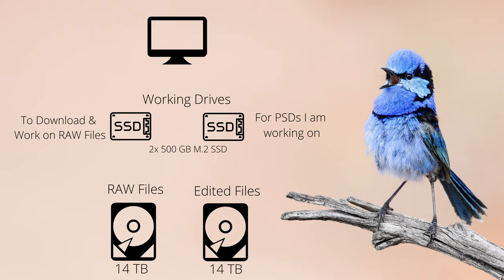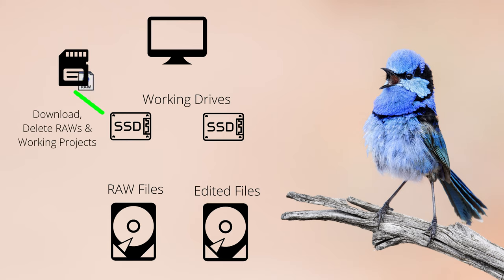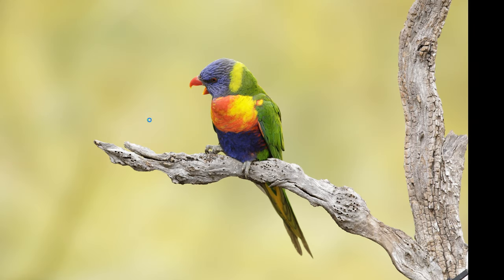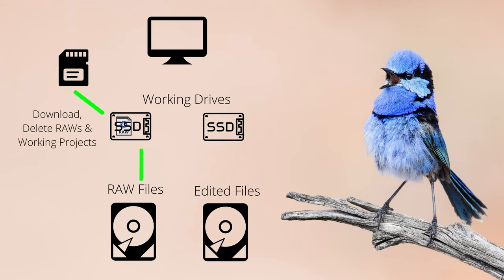I use SSD hard drives because they make working with files much faster — if I'm editing photos in Photoshop, it's just a better and faster experience. When I come home, I plug my card into the card reader, download all the RAW files and videos from that day onto my working SSD drive, quickly click through all the photos and videos, delete the ones I don't want, then copy all the files from the working drive onto my archive drive and add them to the individual species folders.